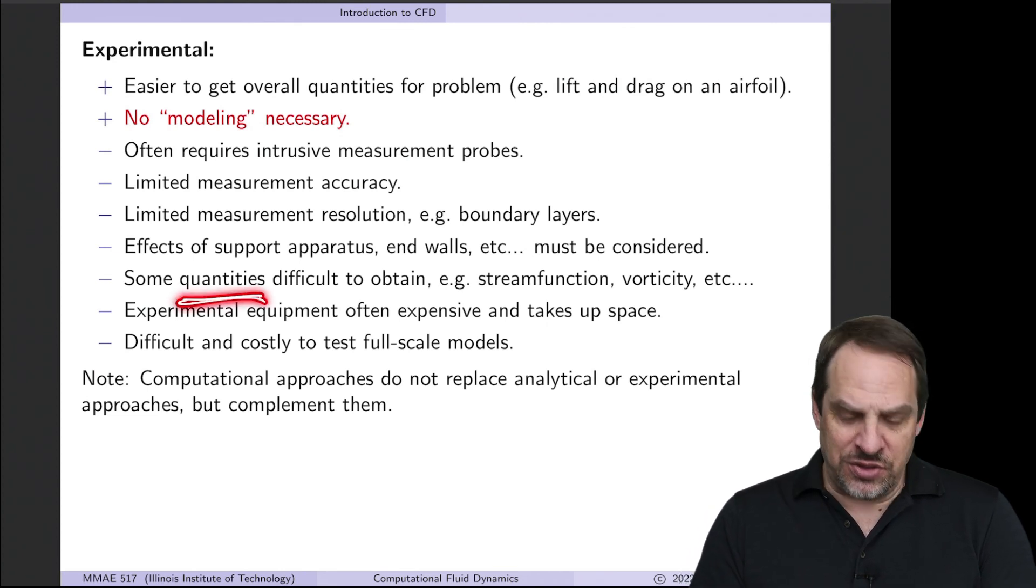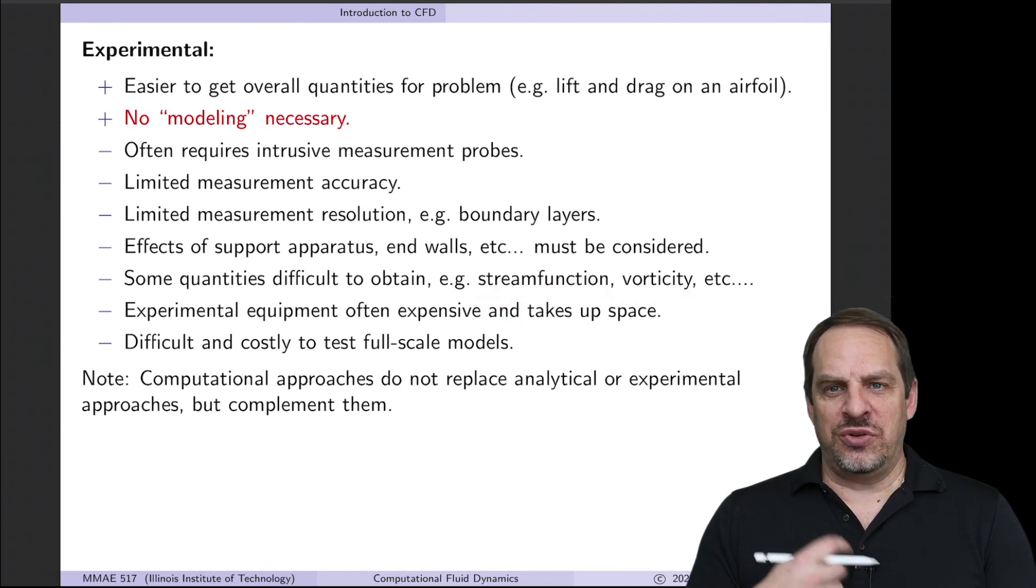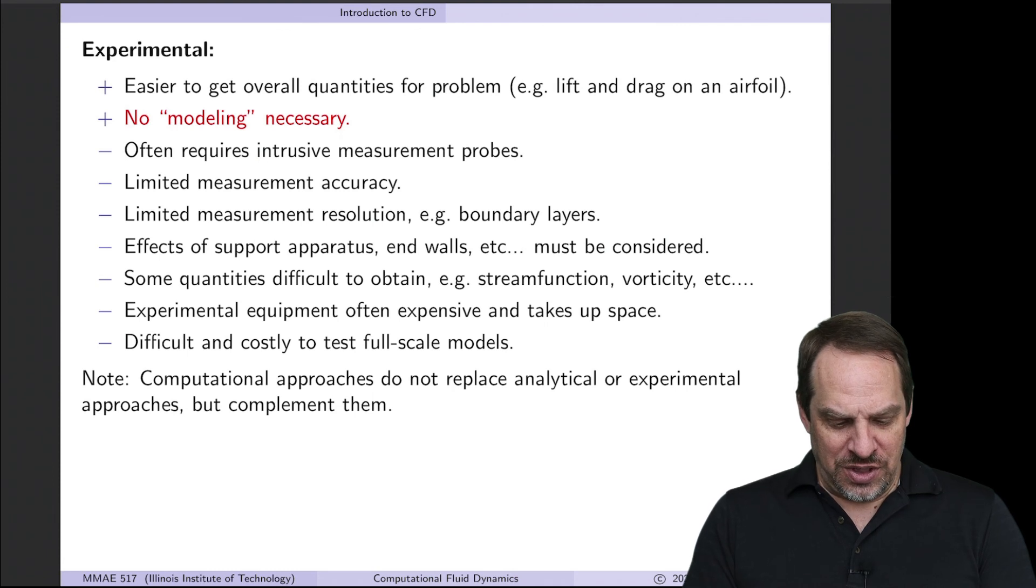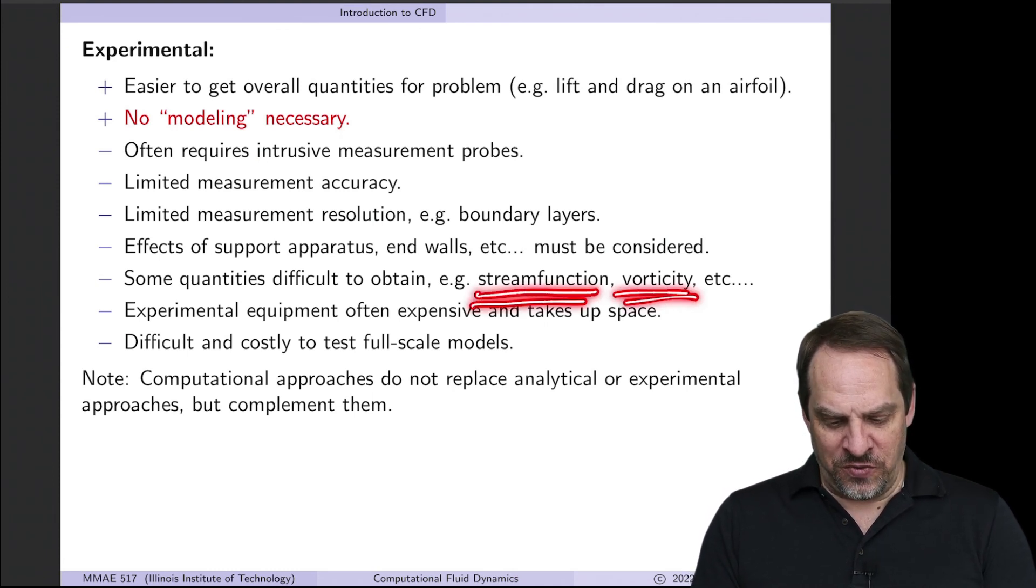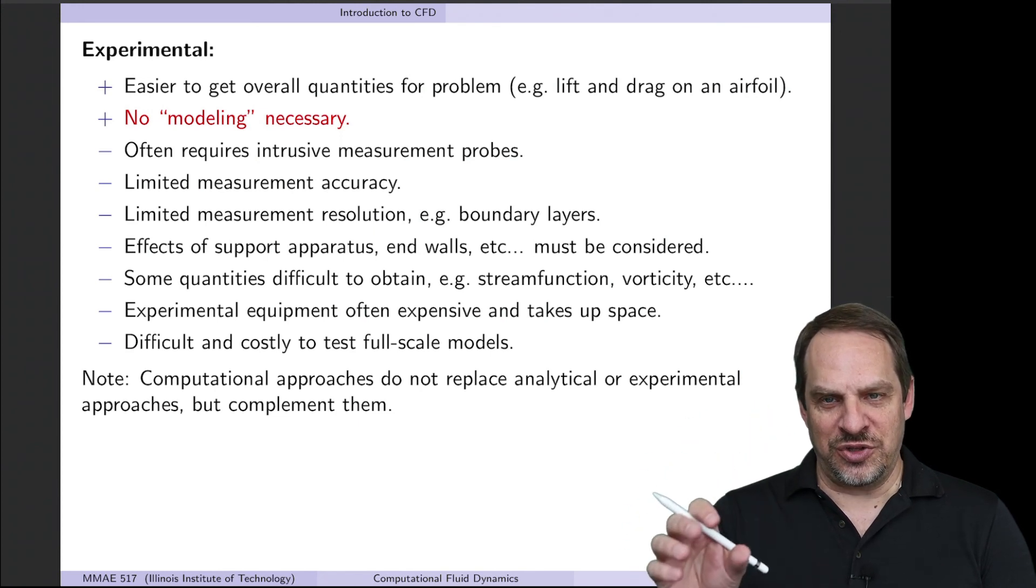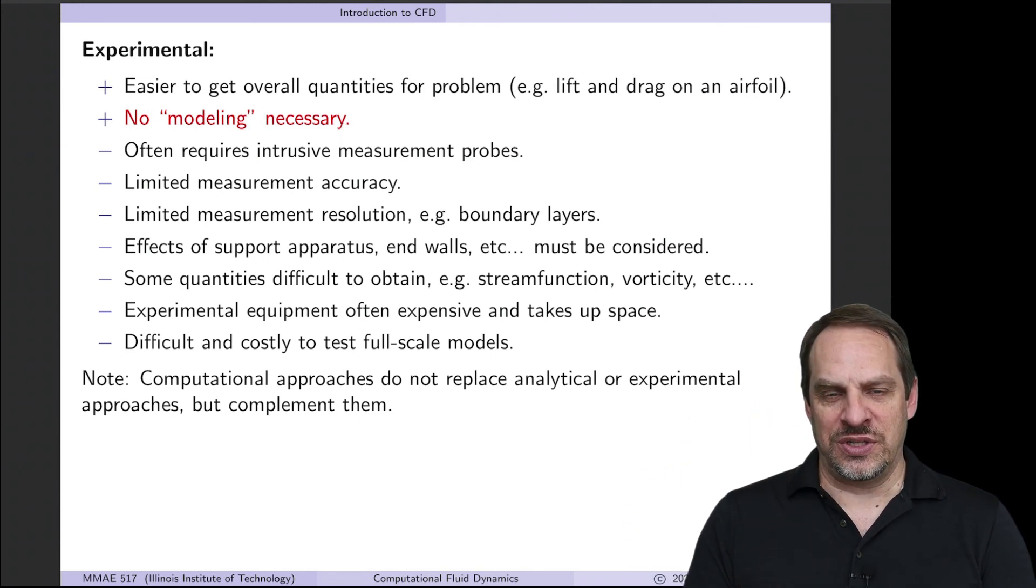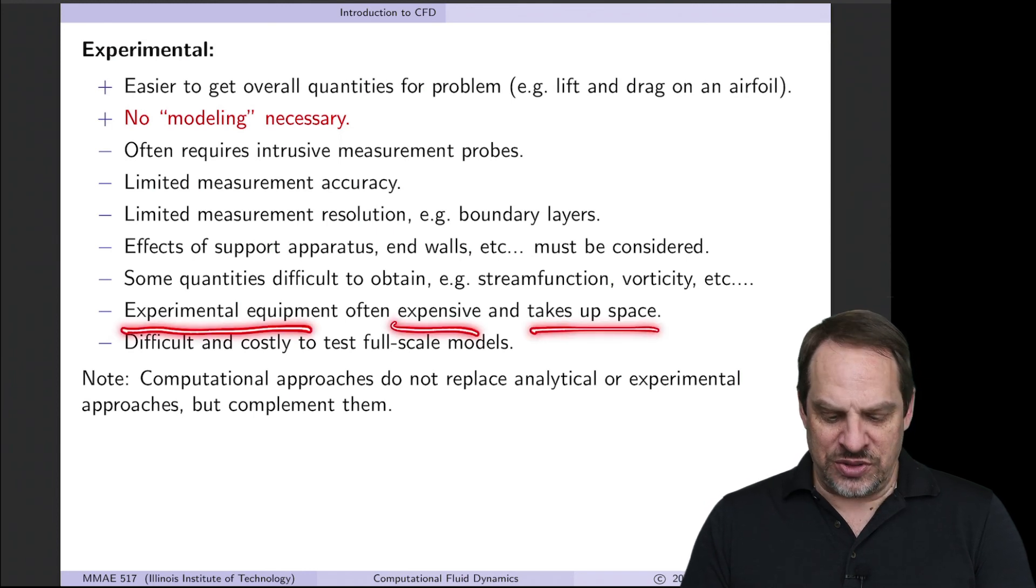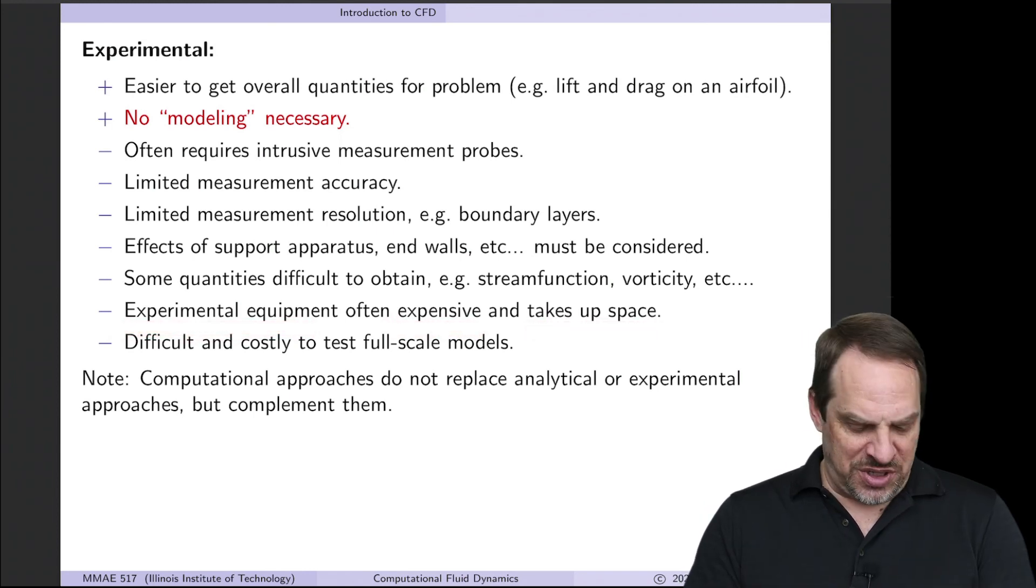There are often certain quantities that are difficult to obtain. So some are easier to obtain, but some are actually more difficult. In fluid mechanics, we like to look at the stream function and vorticity. But there is no stream function probe. There actually is a vorticity probe, but it's not widely used. So these have to be obtained from other measurements. Those measurements have errors. And then you do calculations on those measurements to get things like stream function vorticity. And so those errors propagate into those quantities as well. Experimental equipment is often very expensive. And of course, it takes up space.